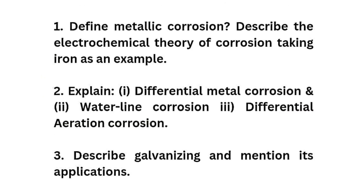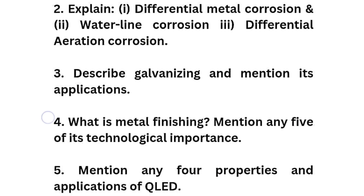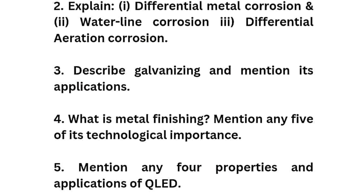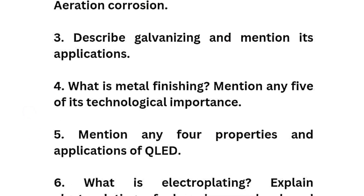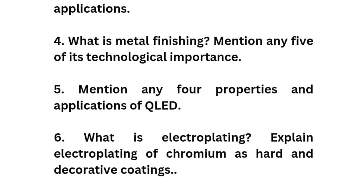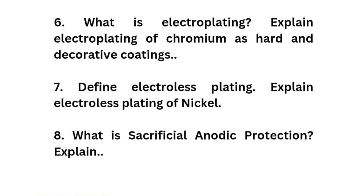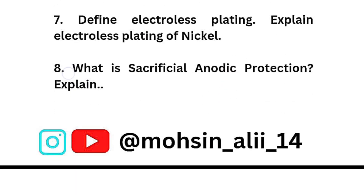Coming to module 2: First, define metallic corrosion and describe the electrochemical theory of corrosion taking iron as an example — the most important one. Second, explain differential aeration corrosion and waterline corrosion. Third, describe galvanizing and mention its applications. Fourth, what is metal finishing? Mention any five of its technological importance. Fifth, mention any four properties and applications of OLED. Sixth, what is electroplating? Explain electroplating of chromium as hard and decorative coatings. Seventh, define electroless plating and explain electroless plating of nickel. Eighth, what is sacrificial anodic protection? Explain.